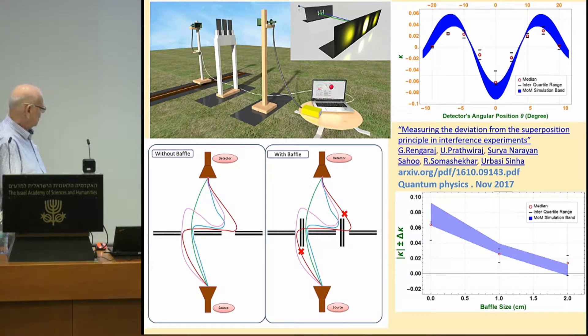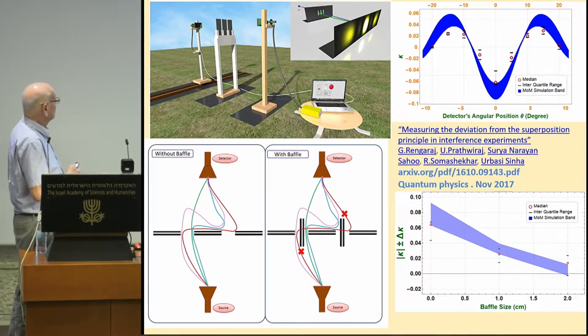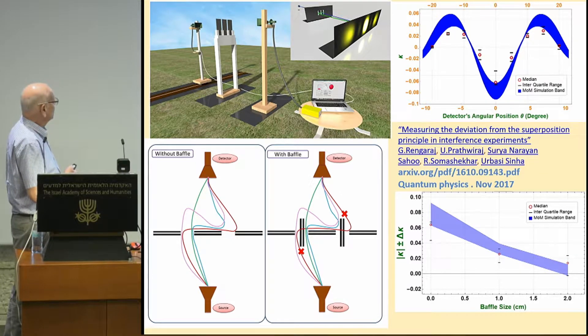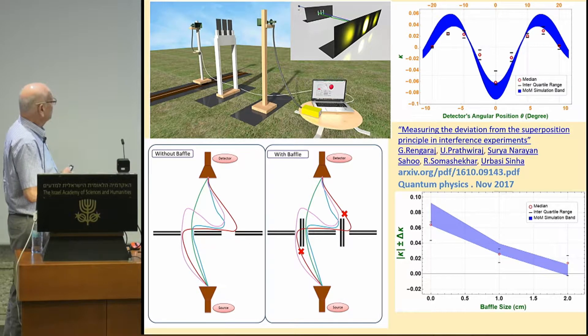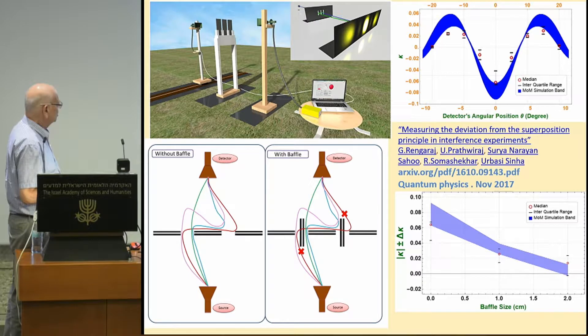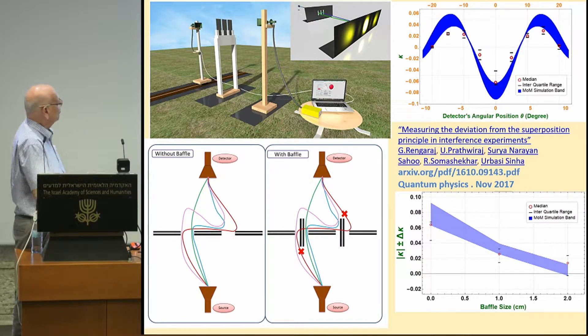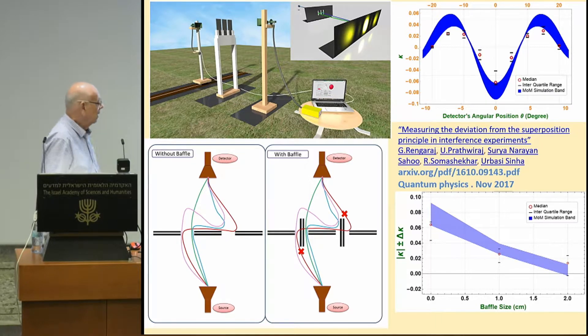And what Sinha did, he is from India, he put a source, microwave source, he put a diffraction three slit pattern and a detector, and he could move the detector and measure the intensity of the Sorkin parameter as a function of distance. And he found out that the Sorkin parameter is not zero.